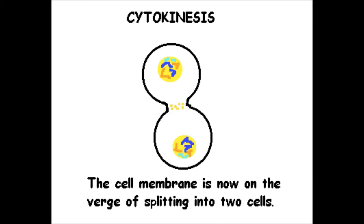Cytokinesis results when a fibering ring composed of a protein called actin around the center of the cell contracts, pinching the cell into two daughter cells, each with one nucleus. In plant cells, the rigid wall requires that a cell plate be synthesized between the two daughter cells.